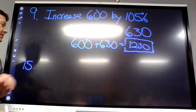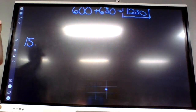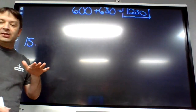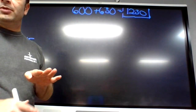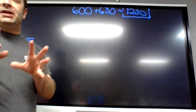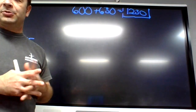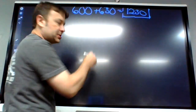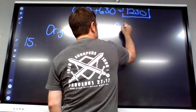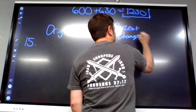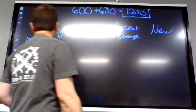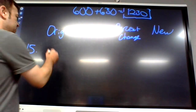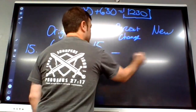Take good notes on these. The table has four columns: the original, the change, the percent change, and the new amount. Each problem leaves some blank. On the first one we need to find the percent change and the new amount. The original is 68 and the change is plus 15.